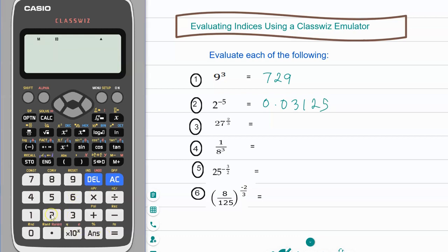Clear the screen and go for number three. Number three is 27 to the two-thirds power, so you have 27 and the power. Here you have a fraction so you're going to click on 2 and the fraction button and 3, close bracket and equals. Your answer is 9.